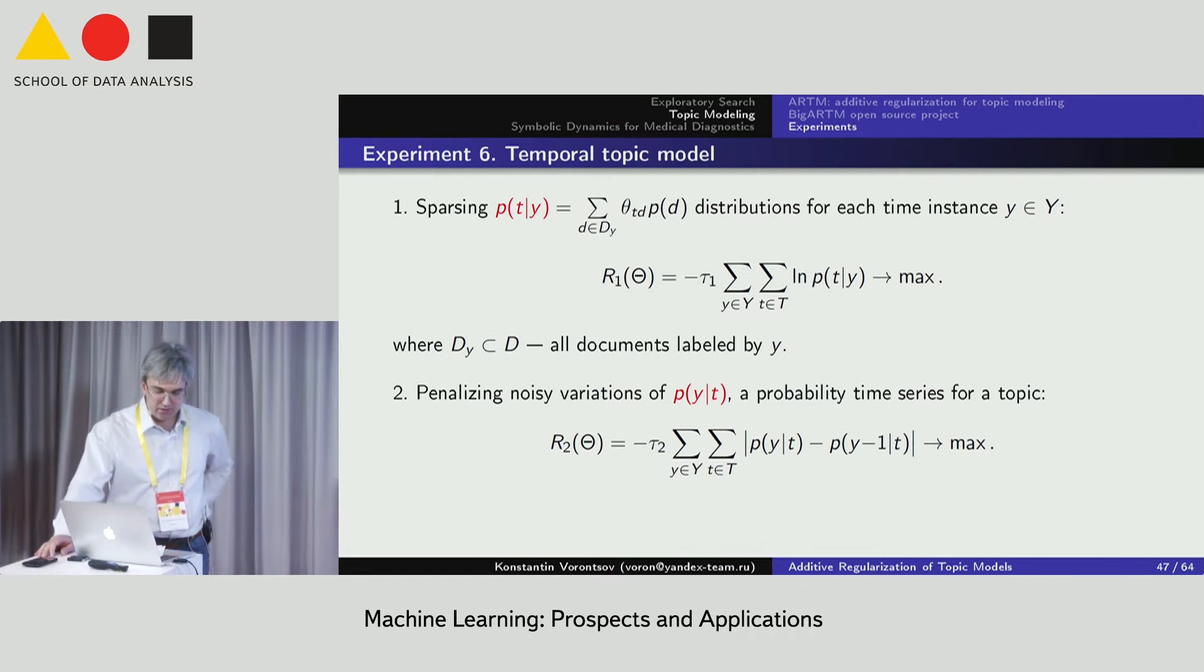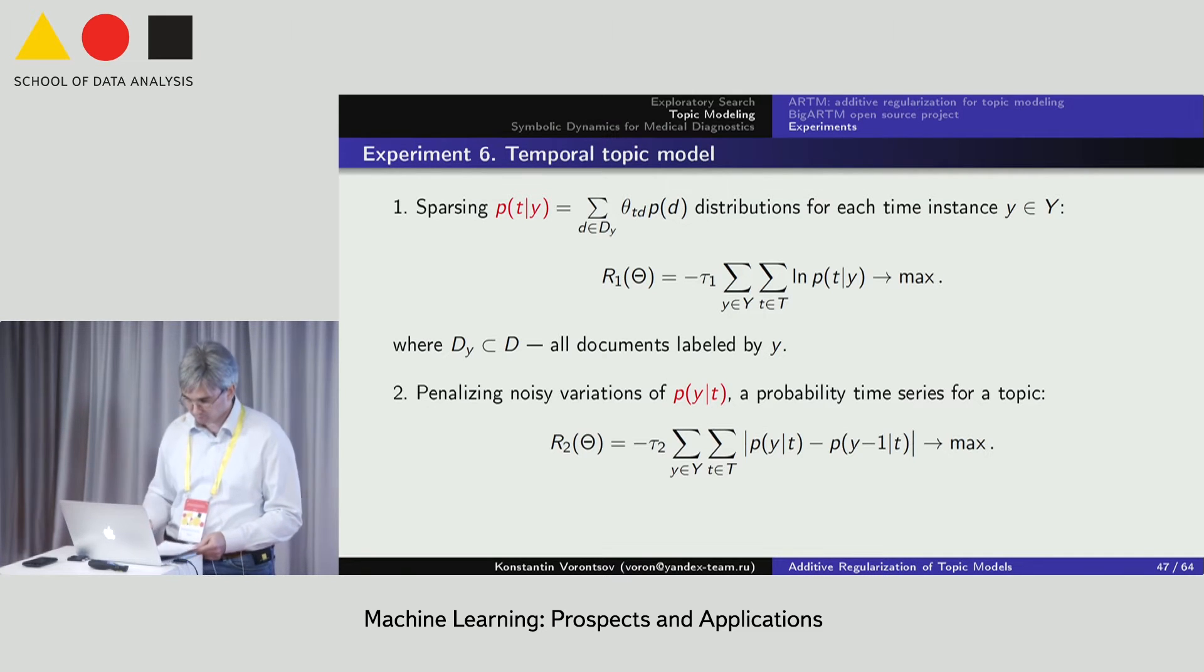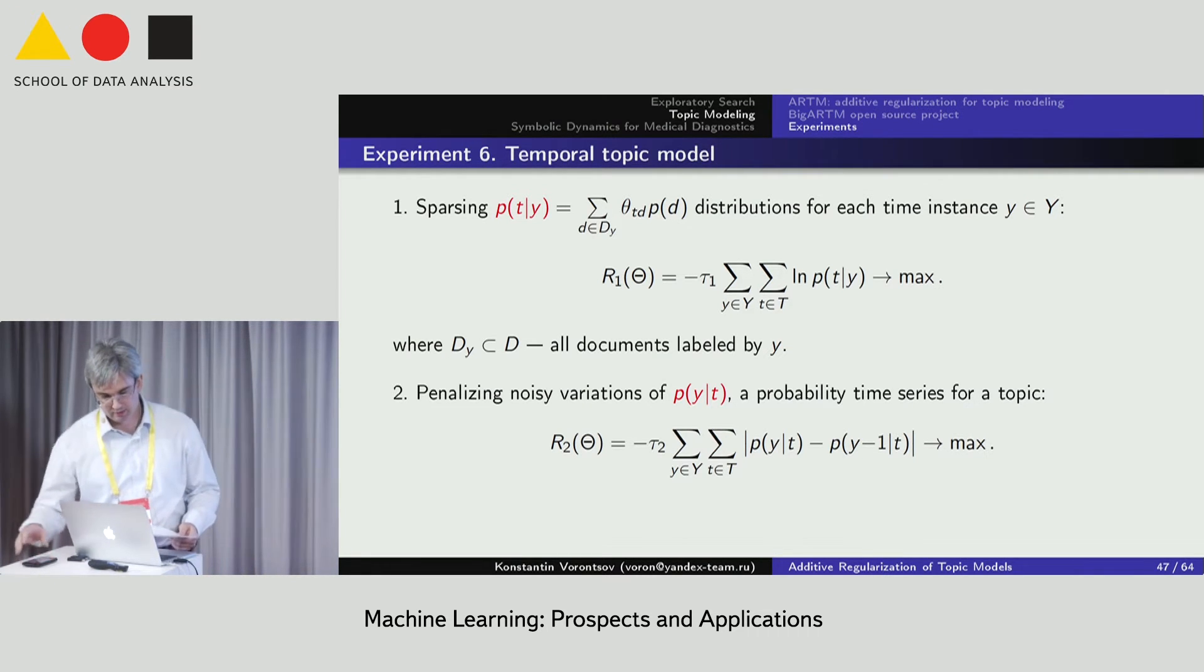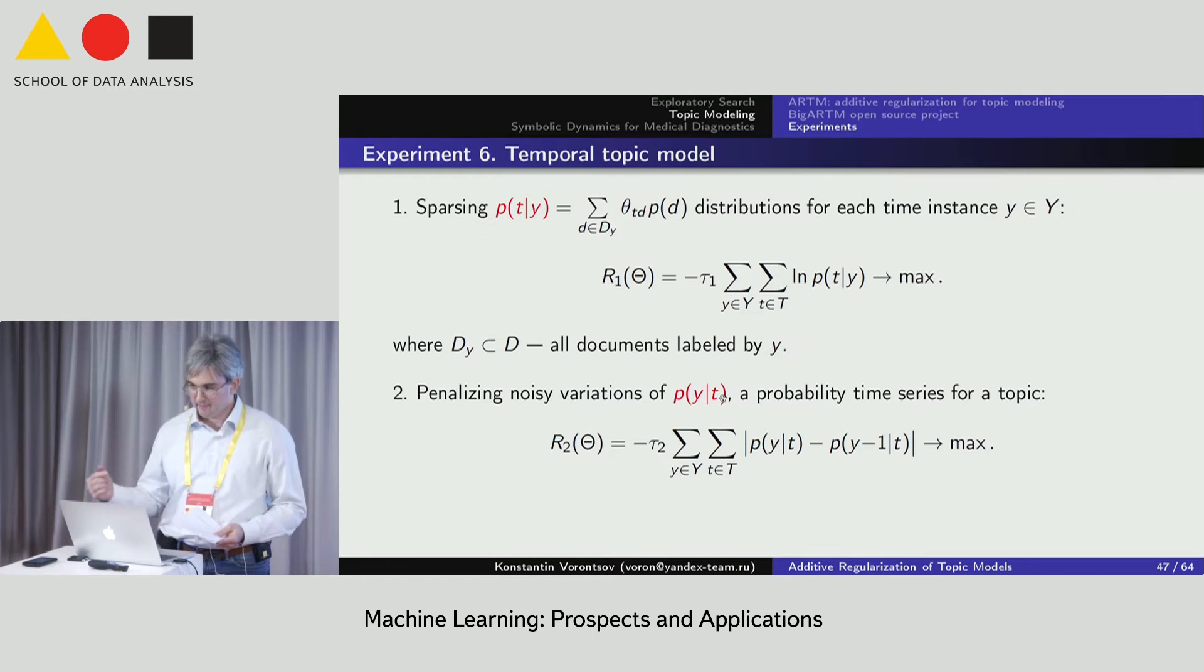The last experiment is for temporal topic model. We used two additional regularizers. The first one for sparsing time distribution over topics. For sparsing, we use Kullback-Leibler divergence. The second regularizer for these tasks is smoothing topic distribution over time. So, here we use the distribution of topic conditional for time moment y, and here, contrary, we fixed a topic t and we smoothed the time series of probabilities for that topic.